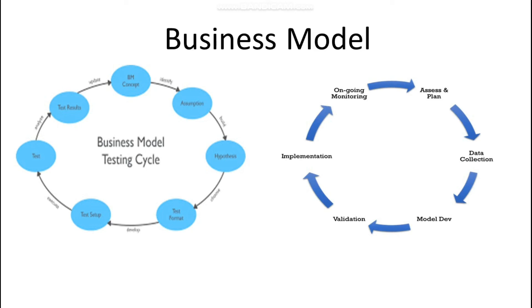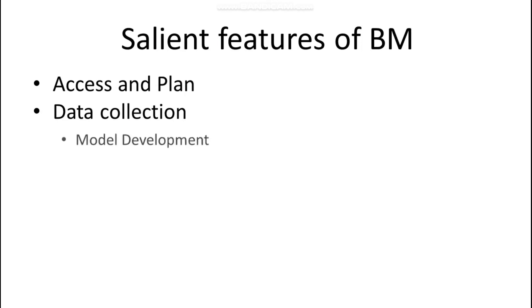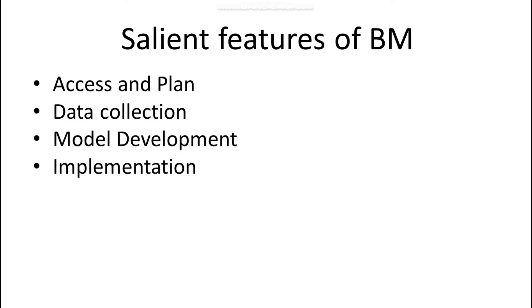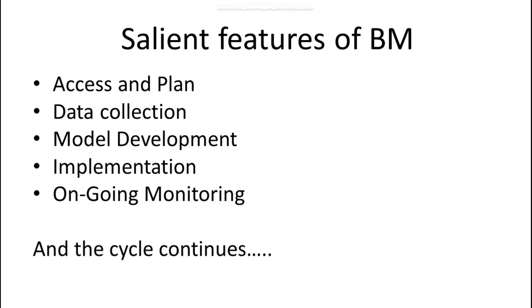The second business model works similarly. The first step is to access and plan, then collect data, then develop the business model, then check its validity in the market, then implement it, then monitor and analyze it. If the managerial staff finds improvements are required, they access and design another plan, collect data again, develop an updated model, and the cycle continues. The salient features are: access and plan, data collection, model development, implementation, and ongoing monitoring.